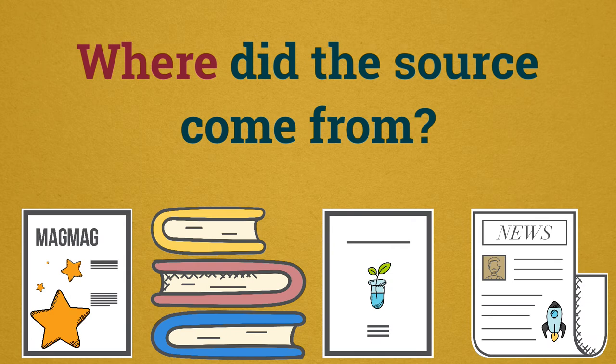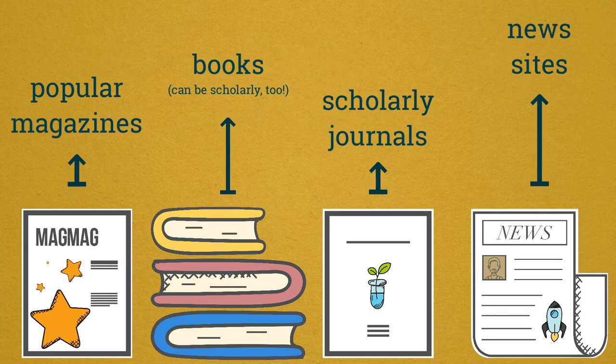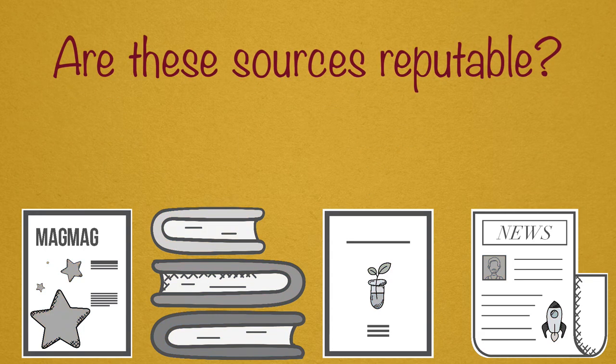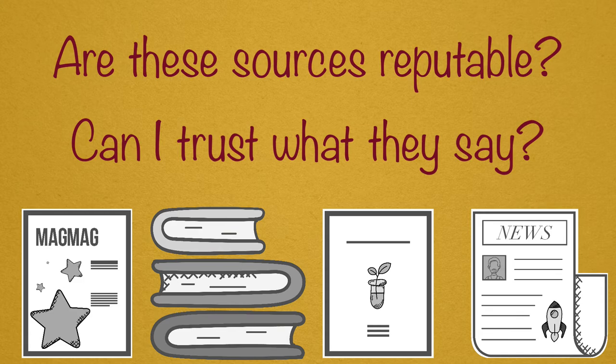Where did the source come from? Where was the source published? For example, sources are published in scholarly journals, newspapers, and other websites. You will need to investigate to find out if your source is published by a reputable journal, news organization, or site.